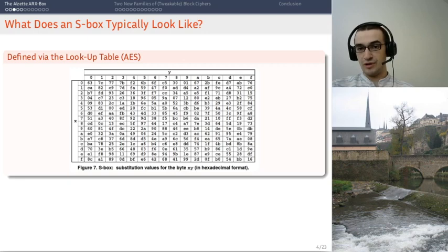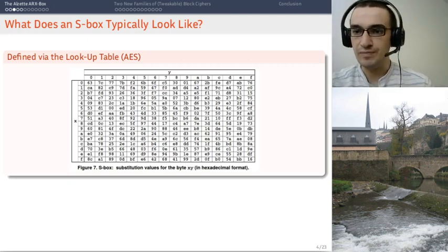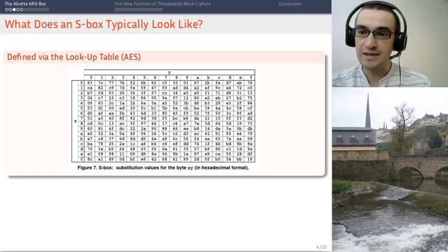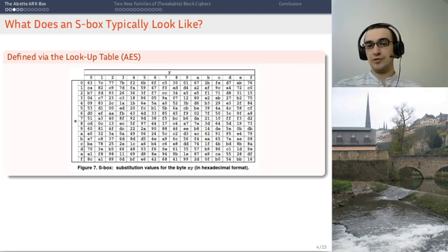In practice, what does an s-box look like? Well, that's the s-box of the AES, the block cipher. You can specify it just using its lookup table. So in this case, it maps the input bit string with eight zeros to the output bit string with 0x63, etc. You can also define it with a math formula, which is also the case for the AES.